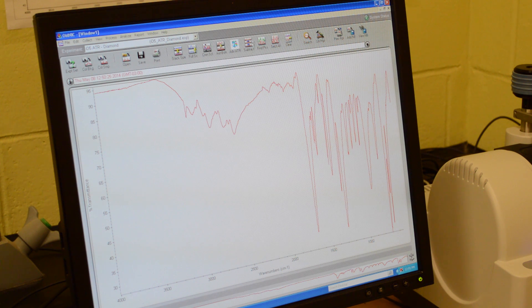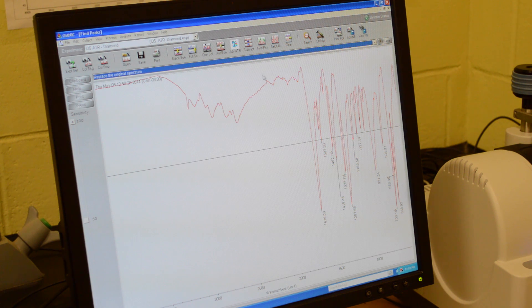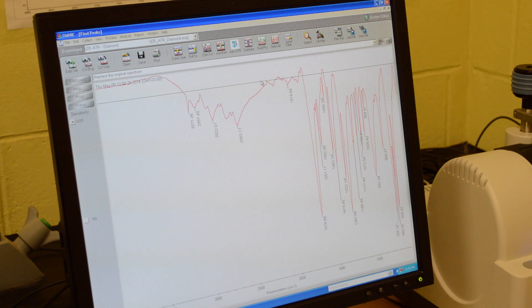Then you're going to want to find your peaks because you want to know what functional groups are present. Press the find peaks button. You're going to want to make sure that you get all of the peaks, so you can adjust the line by clicking above all the peaks.